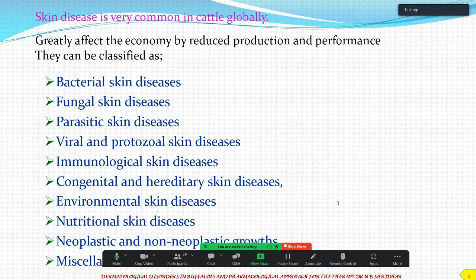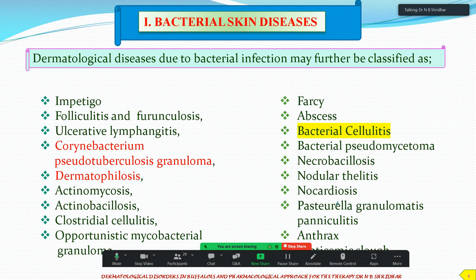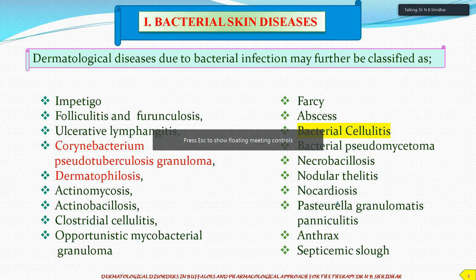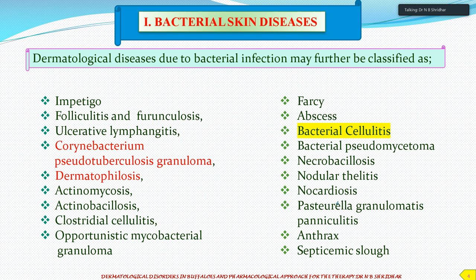We will go into a little detail about some of the disorders, which is very much required for practicing veterinarians. Before the classification, we will see what all bacterial skin disorders occur in buffaloes. Very similar to cattle, buffaloes also suffer bacterial infections, classified as impetigo, folliculitis, furunculosis, ulcerative lymphangitis, Corynebacterium pseudotuberculosis granuloma, dermatophilosis, actinomycosis, actinobacillosis, clostridial cellulitis, opportunistic mycobacterial granuloma, farcy, varieties of abscesses, bacterial cellulitis, pseudomycetoma, mycetoma, necrobacillosis, nocardiosis, postural granuloma, anthrax, and septicemic slough.